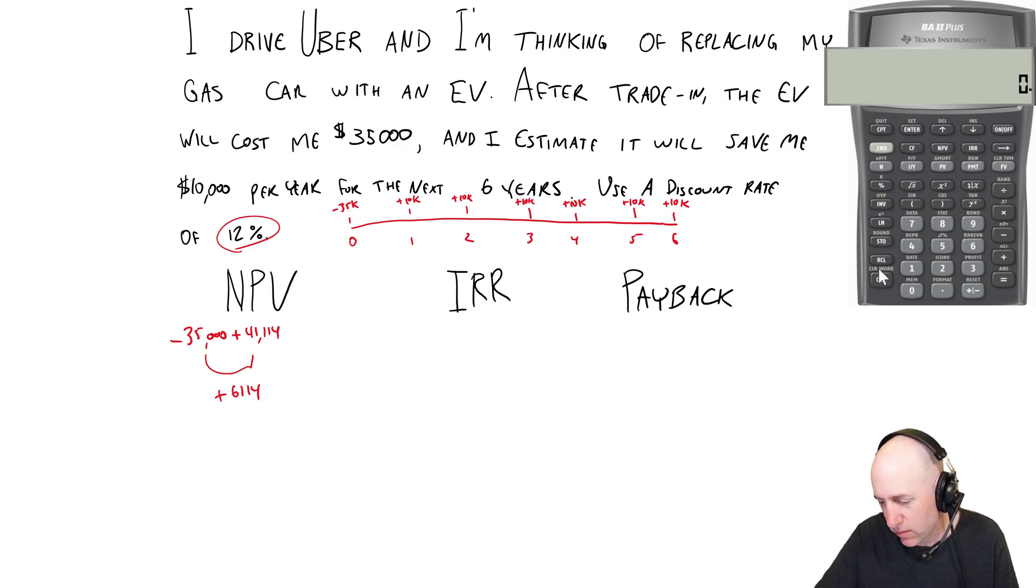what I would do if I was using the BA two plus is you enter cashflow. So you go CF. Let me clear this out. I've done this in preparation. So my cashflow at time zero is negative 35,000. I hit enter down arrow. My cashflow at time one is plus 10,000. And since all the cash flows are the same, I can use this frequency and I can say that there's six of them. So I hit six enter. That's it. I've got all my cash flows in the calculator.